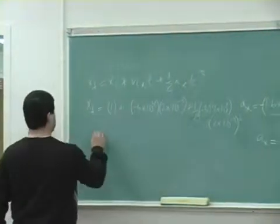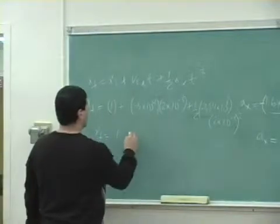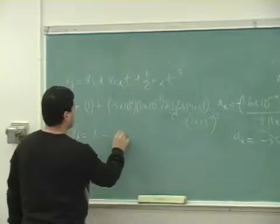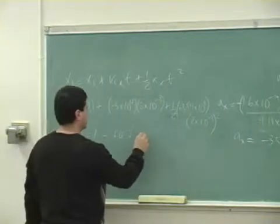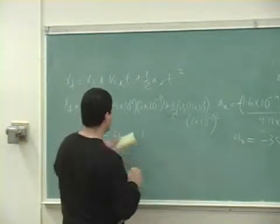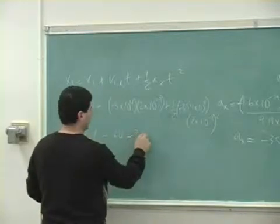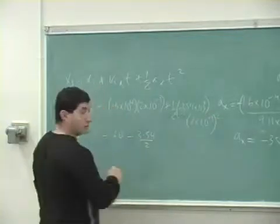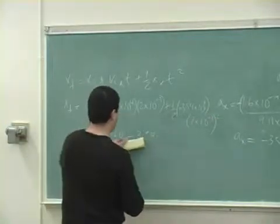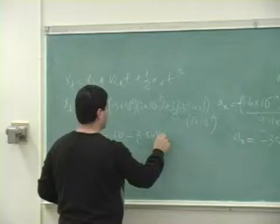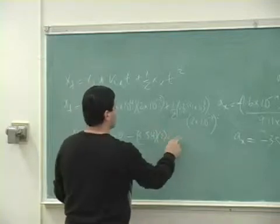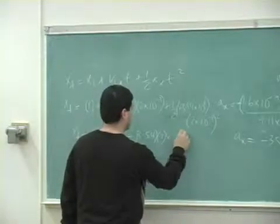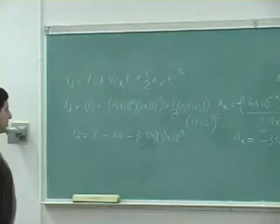So 1 plus this whole thing, so I get 1. This is going to be negative, this is 6, 60. 1 negative 60 plus, well this one is going to be negative actually. Negative 3.54 over 2 times this is going to be 4 when you square it. So it's actually going to be times 2 times what? 10 to the eighth, 10 to the minus 6th, that's going to be 10 to the second. So about 600.